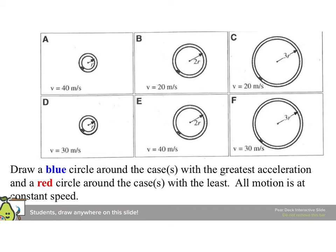Here it says, draw a blue circle around the case or cases with the greatest acceleration and a red circle around the case or cases with the least. All the motion is at constant speed, so we don't have to worry about how that changes. To do that, we're going to go back to saying the acceleration is V squared over R.